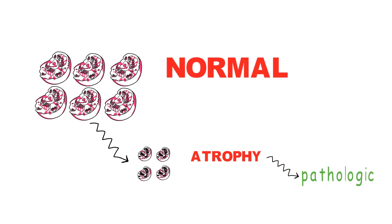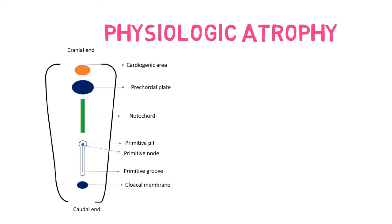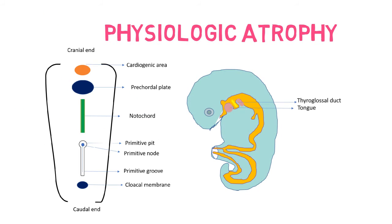Atrophy occurs due to pathological causes and physiological causes. So physiological causes include those during development, that is notochord and thyroglossal duct atrophy during fetal development.